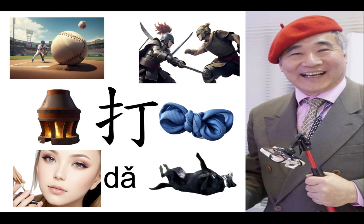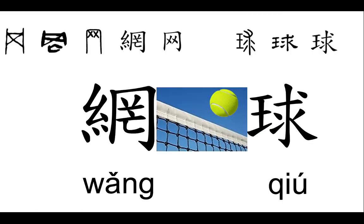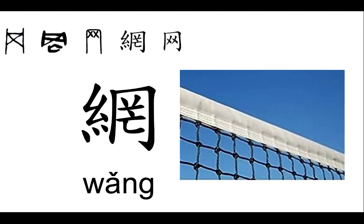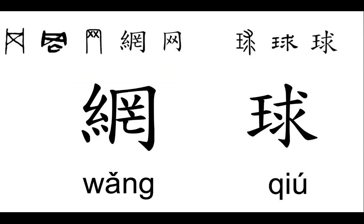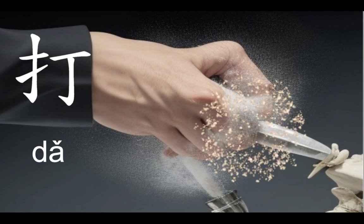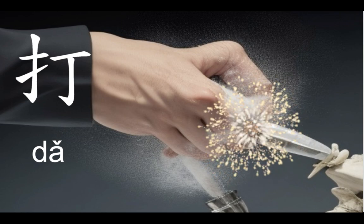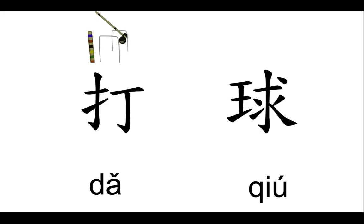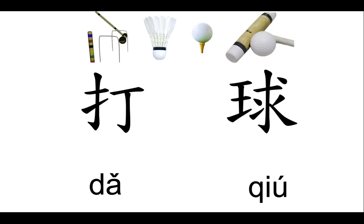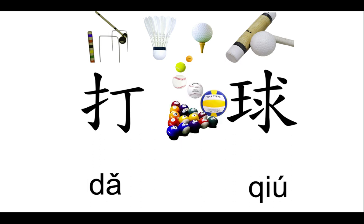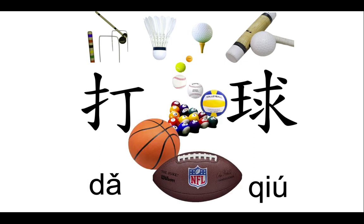Remember in the last episode we broke down the word to hit? This time, we're all about tennis, and the characters net and ball that make it up. We already explained that means hitting with your hand. So we'll also explore other hand-driven ball sports and why they're called what they are in Chinese. Don't worry about memorizing all the characters in their names now — we'll get to those later. Just focus on getting the gist of these sport names for now.